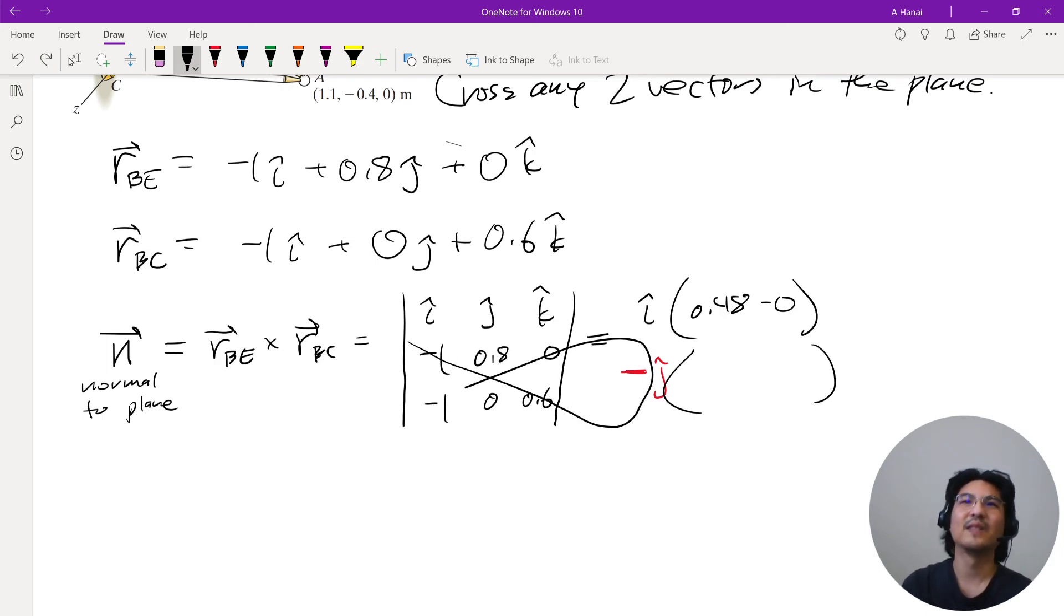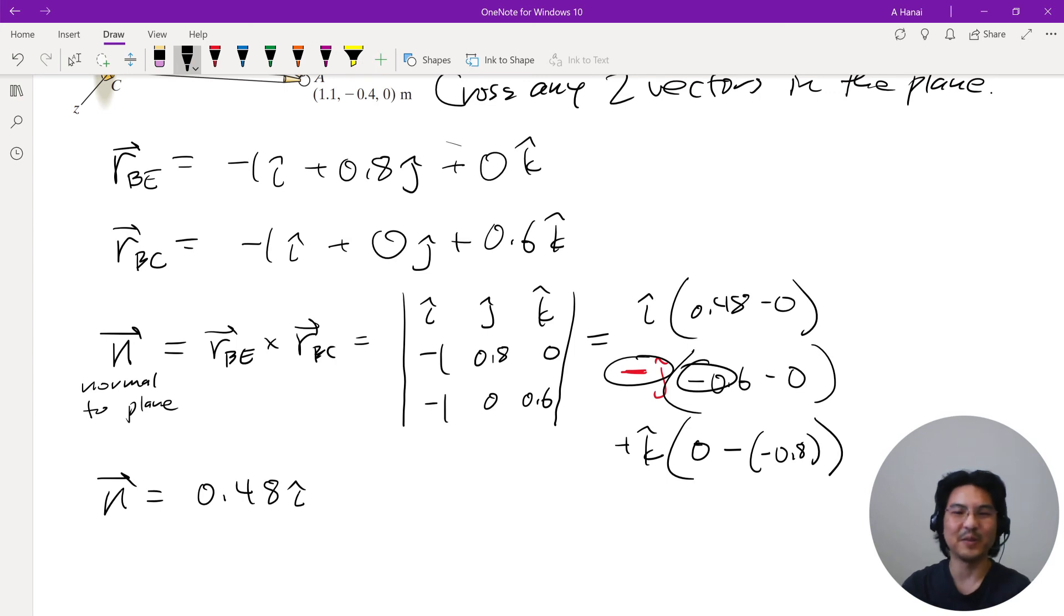Now in the k direction: ignore these, multiply this like a fish, so 0 minus negative 0.8. Let me just rewrite it: i direction, j direction that's negative negative so plus, and then here again negative negative so plus.